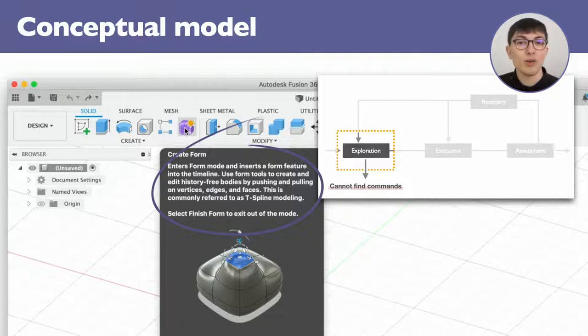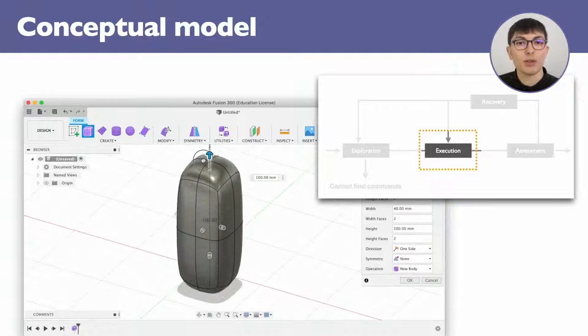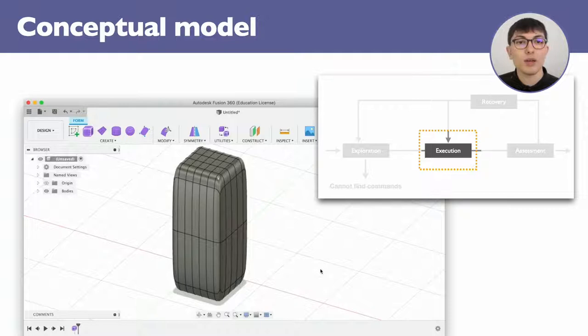In the execution phase, the goal can be either to learn what the command does with no specific task in mind, or simply achieve a specific goal. Again, the trial and error episode can end here if the user cannot figure out how to operate the command. Otherwise, we move on to the assessment phase.